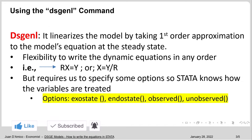The options are: exostate, endostate, observed, and unobserved. I'm going to be talking about exostate and endostate in the next slide. Observed and unobserved mean: if you have a variable for which you have real data, you can include it in the observed option. However, if you don't have real data for that variable, then you are going to include it in the unobserved option.